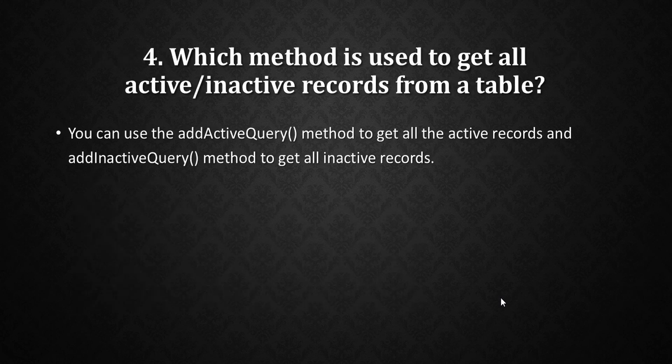The next question is: which method is used to get all active or inactive records from a table? They may ask you to write a script to get all active incident records or all inactive users. One way is to use addQuery and pass the field, field character filter condition like active, comma, true. But we also have an alternative: for retrieving active records use the addActiveQuery method, and for retrieving inactive records use the addInactiveQuery method.